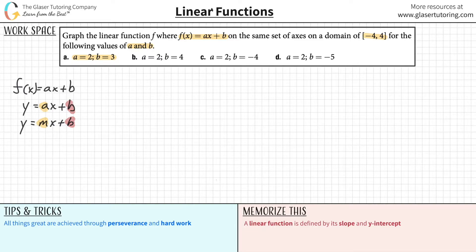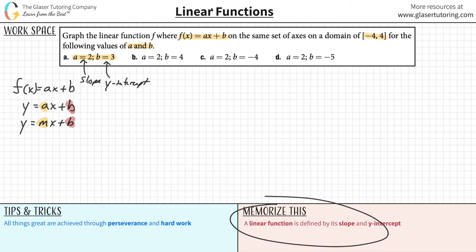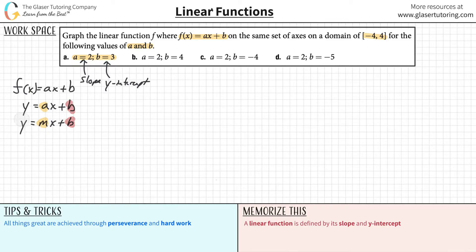So essentially, a now represents the slope — this thing is a slope value, and this thing here is the y-intercept. Any linear line is defined by its slope and its y-intercept; they are unchanging for that particular function. Change the slope or change the y-intercept, you change the line. So that's the first piece.